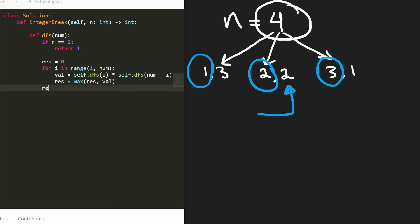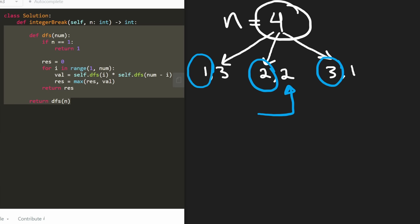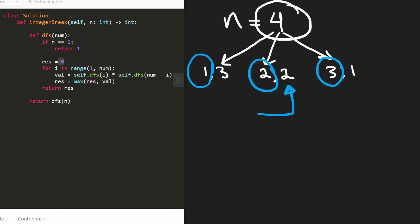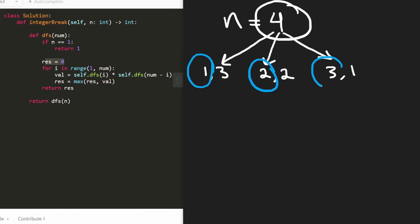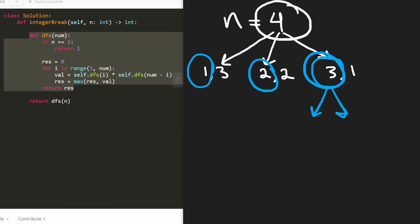And that's the entire recursive logic — we return result and call DFS passing n. This solution will work but won't pass on LeetCode because it's not efficient enough. There's also one issue: if we leave result initialized to zero and run the for loop, we're forced to always break things down. But for sub-problems like three, we're not required to break them up. With the current code, three won't remain as three — it'll probably end up as two times one, which is two. We need to fix that.